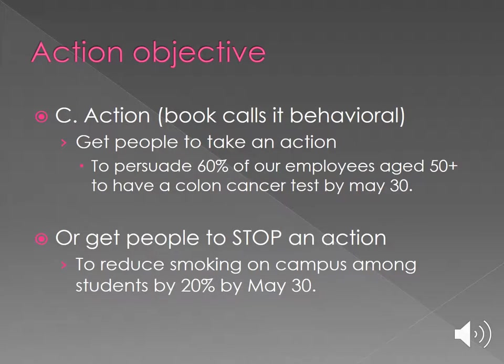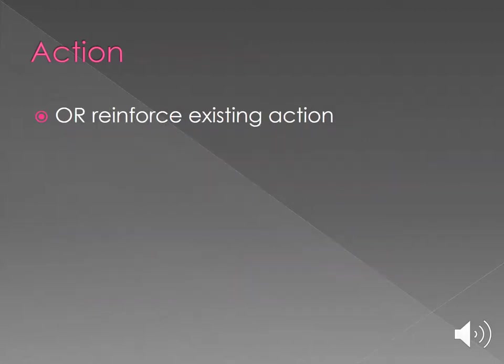The third A is Action — getting people to take a certain action or stop a certain action. For example, persuading employees age 50 or older to go have their colon cancer test, or getting people to stop smoking on campus. Or reinforcing an existing action — if people are recycling, you want to reinforce that they continue to do that.